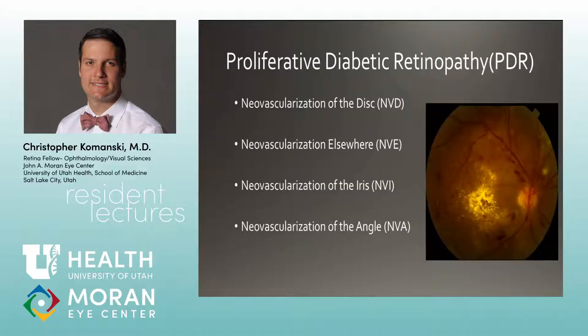Moving to proliferative diabetic retinopathy, different areas can neovascularize. The terms are: neovascularization of the disc (NVD), neovascularization elsewhere (NVE) — on the retina one disc diameter away from the disc — and neovascularization of the iris and angle. These acronyms are almost always used in documentation.